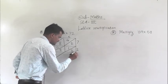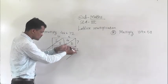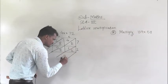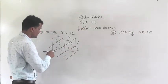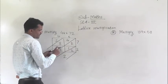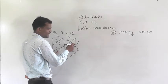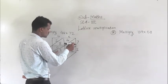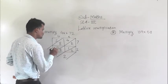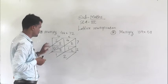Now we will add the columns. Here only 2 is there, so write 2. Then add this column: 8 plus 1 is 9, and 9 plus 2 is 11. So 11 means write 1 right here and 1 carry to the next column.